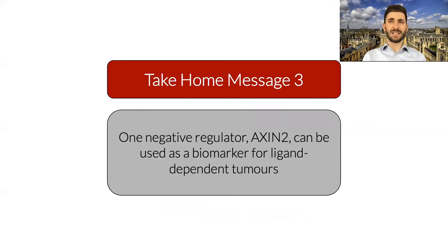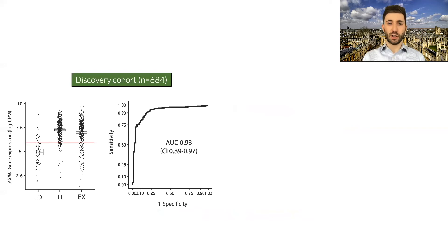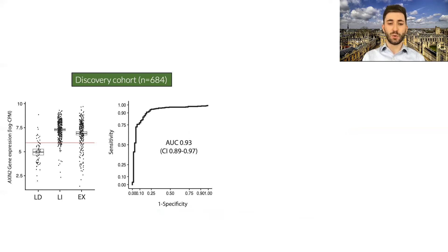In fact, Axin2 expression differs so significantly between ligand-dependent and independent tumours that we were able to exploit it as a biomarker for ligand-dependent tumours. In our discovery cohort of 680 tumours, we saw very significant differences in expression that equated to an area under the curve of 0.93, and we confirmed this in two independent validation cohorts, making up both resection specimens and biopsy tumours with excellent diagnostic performance.